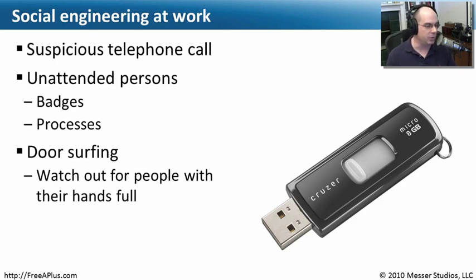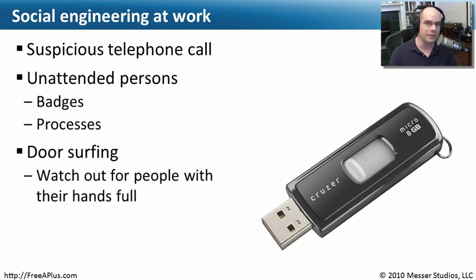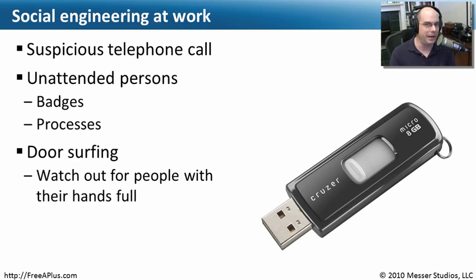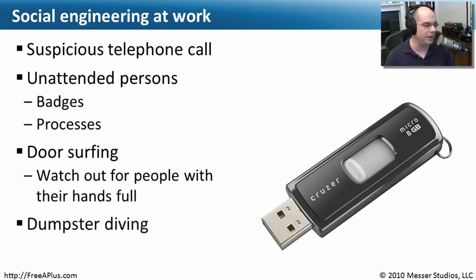Another technique is tailgating, sometimes called door surfing. If you want to get into a corporate environment without a badge, grab some donuts and start walking in. You have food, it smells good, and you say 'Oh, my hands are full — could you get the door for me?' People are more than happy to let the person with donuts in. So make sure you check that person for a badge and know who they are — you don't want strangers getting in that easily.